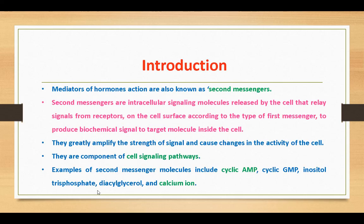Introduction: Mediators of hormone action are also known as second messengers. These second messengers are intracellular signaling molecules released by the cell, that relay signals from receptors on the cell surface, according to the type of first messenger, to produce a biochemical signal inside the cell. First messengers are extracellular factors, because peptide hormones and neurotransmitters, which are examples of first messengers, are biochemically hydrophilic molecules.